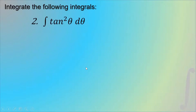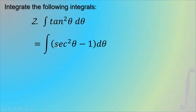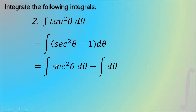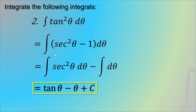Second example: the integral of tan²θ dθ. We use the Pythagorean identity to rewrite it as the integral of (sec²θ − 1) dθ. Separating into two integrals, that is the integral of sec²θ dθ minus the integral of dθ. Since the integral of sec²θ equals tan θ, and the integral of dθ is θ, the result is tan θ minus θ plus C.